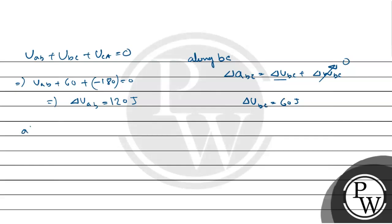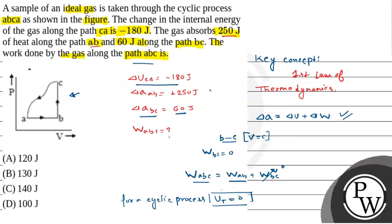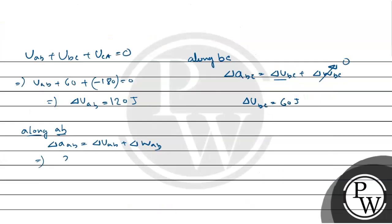Now, along path AB, we put these values. So, del Q_AB is equal to the internal energy at AB plus work done at AB. Now, del Q_AB is given as 250. So, 250 equals 120 plus del W_AB. So, del W_AB equals 130 joule.